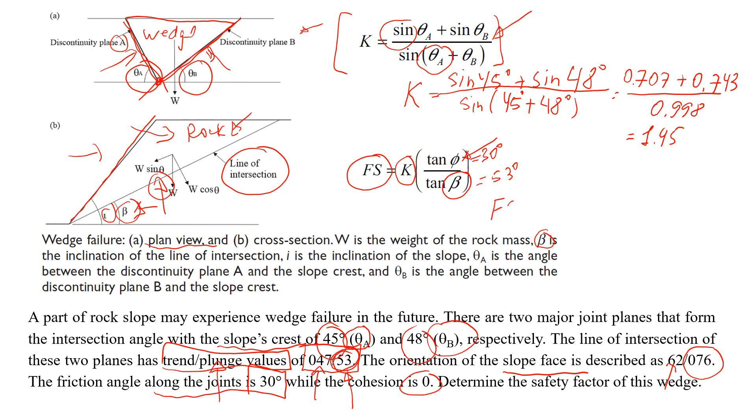So now we can estimate the safety factor. It will be K, which is 1.45, here we have a tangent of 30 degrees because that's the friction angle along the discontinuity planes, and here we have a tangent of 53 degrees because 53 is the inclination of the line of intersection of those two planes.